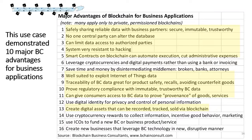Beyond supply chain, other promising areas for blockchain include healthcare records, the insurance industry, the automotive industry, and loyalty programs starting to spring up in restaurants and airlines. Most industries are going to be using blockchain in some application or another — they're in every single industry and they're just going to keep growing.